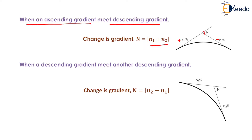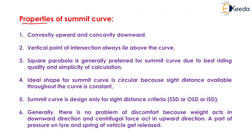Case 4: when a descending gradient meets another descending gradient (−n1% and −n2%), the change in gradient N = |n2 − n1|. Properties of summit curve: summit curves have convexity upward and concavity downward, and the vertical point of intersection always lies above the curve.